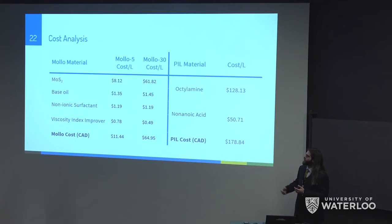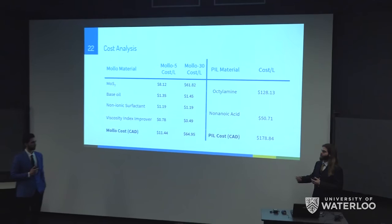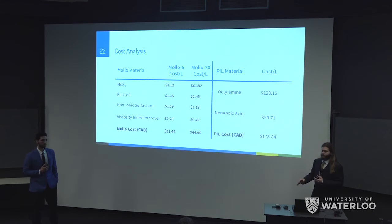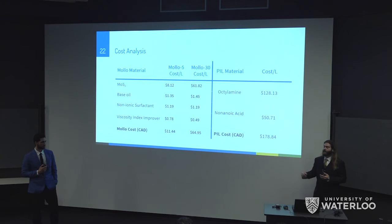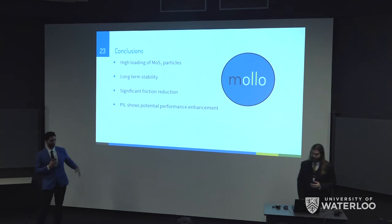We also performed a cost analysis to evaluate the economics of our product. MALDO 5 costs approximately $11 per litre to make based on materials, while MALDO 30 costs approximately $65 per litre due to the higher MoS₂ content. The majority of costs in both cases come from the MoS₂ particles themselves. We also looked at oleylamine, which costs about $179 to make. These costs may seem high, but they will be significantly reduced when diluted into a lubricant and when manufactured at bulk scale rather than lab-scale quantities.